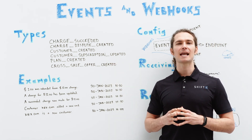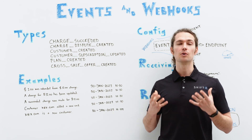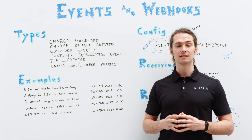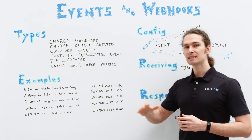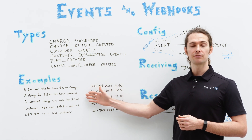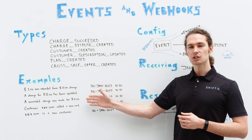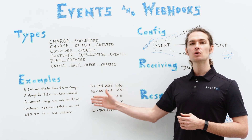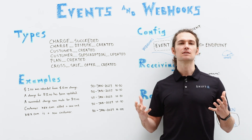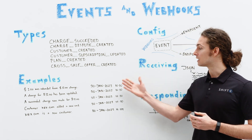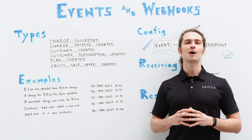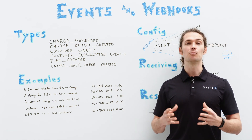Now that you have an understanding of what events are available within your account, here's a look at how some of these events might appear in the system. In this example, you can see that a portion of a charge was refunded, a charge was made, a customer was added, and the new customer added a new card. Each of these events also has a date and time associated with it. If you need more details, JSON objects can be utilized to access more information.